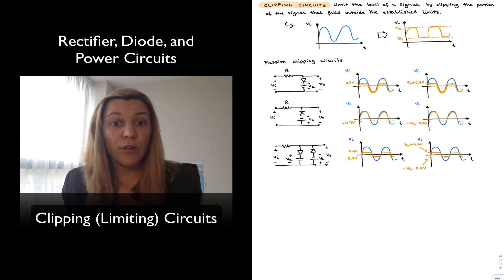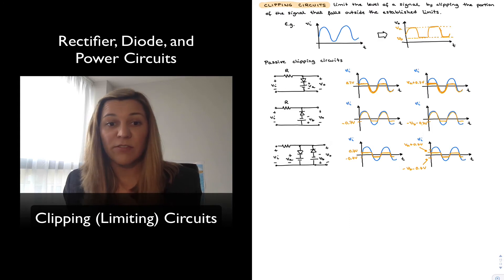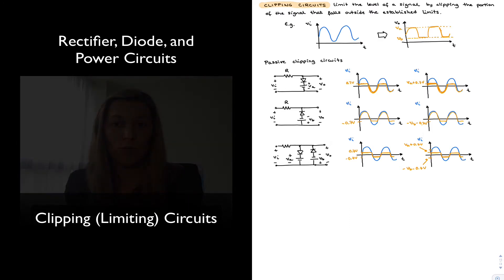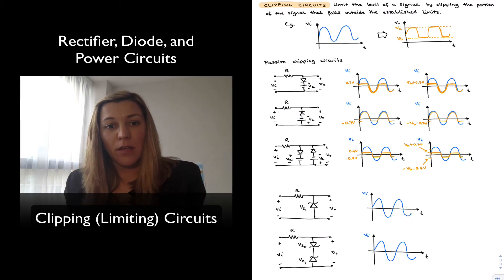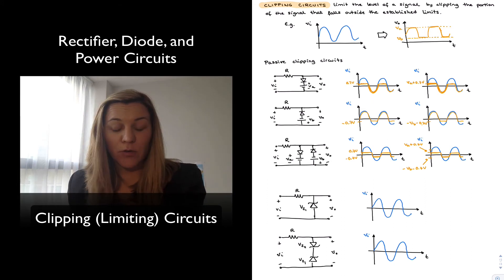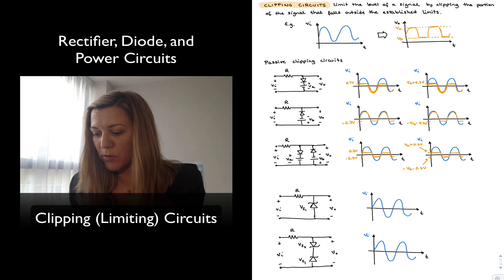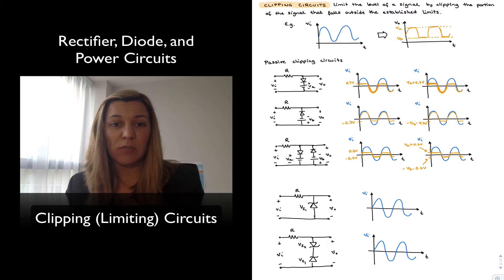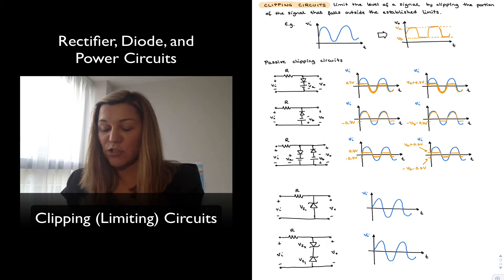The configuration with a Zener diode simply replaces the regular diode in the previous case with a Zener. A Zener is a diode that is meant to be operating in the breakdown region. Notice the change in orientation with respect to the first passive clipping circuit. Zener diodes are available with different breakdown voltages, and we can select the Zener with a breakdown voltage equal to VA, or VZ1 as labeled here.